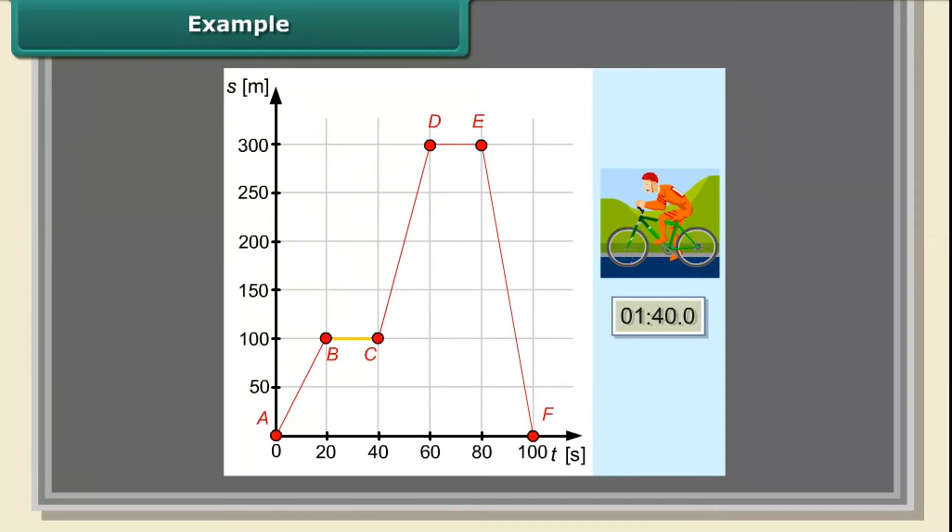Segment BC indicates that the cyclist stopped after having traveled a distance of 100 meters. From segment CD, we can see that the cyclist went on to move with a greater speed. In 20 seconds, he covered a distance of 200 meters, which means that he was traveling with a speed of 10 meters per second.